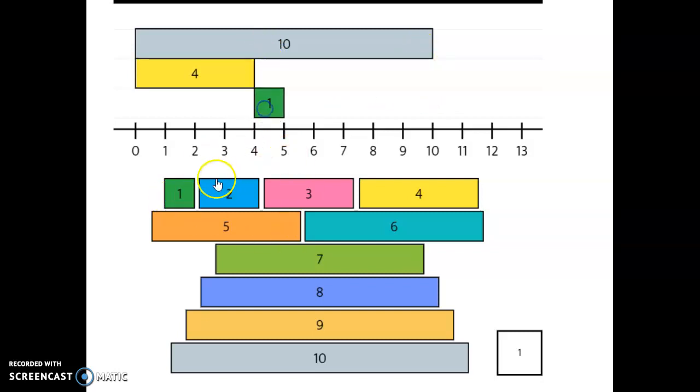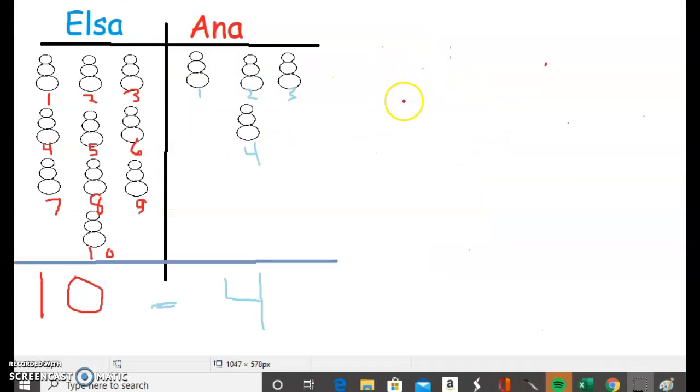We have 1, 2, 3, 4, 5, 6. So that means Elsa built 6 more snowmen than Anna. So looking at our number problem.